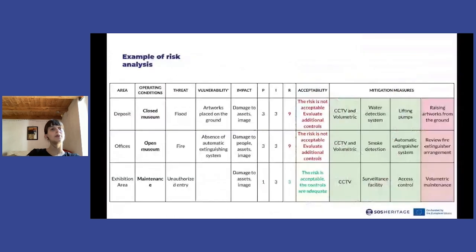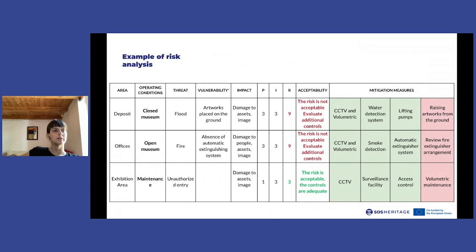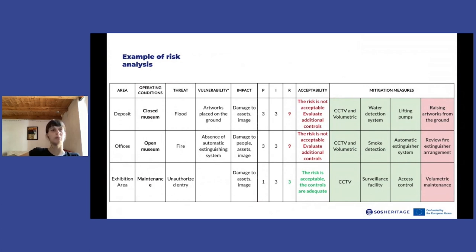In this slide you can see an example of a risk analysis. In the first column we have the area of the museum being analyzed, for example the deposit, the offices, the exhibition areas. In the second column you can see the operating conditions of the museum — the risk scenarios — so for example museum closed, open museum, maintenance activity, and so on. Then you can see the threat being analyzed, for example flood, fire, and unauthorized entry.